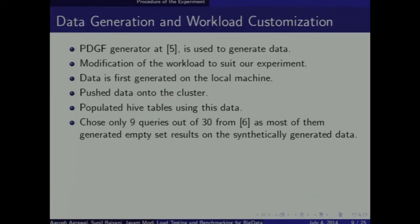Then we needed to run the benchmark. Out of the 30 queries provided by Big Bench, we used only 9 of them, because many of the 30 queries produce empty result sets, so there was no meaning in testing them all. We chose 9 queries that produce visible results.